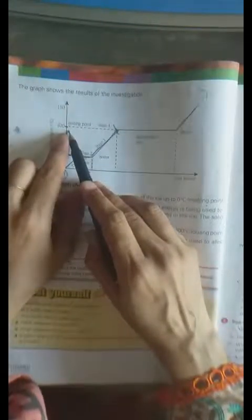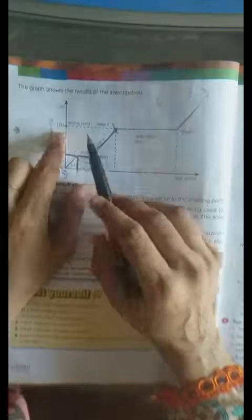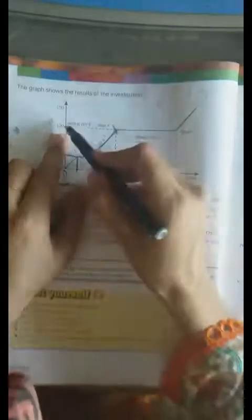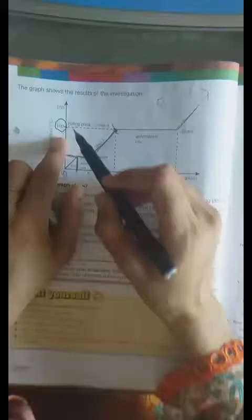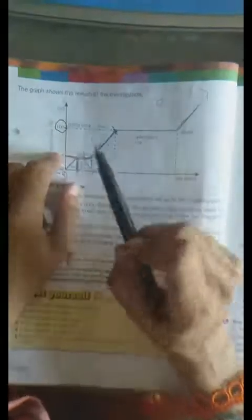And in third stage, temperature rises up to 100 degree centigrade. And this is the boiling point. What is 100 degree centigrade? It is a boiling point.